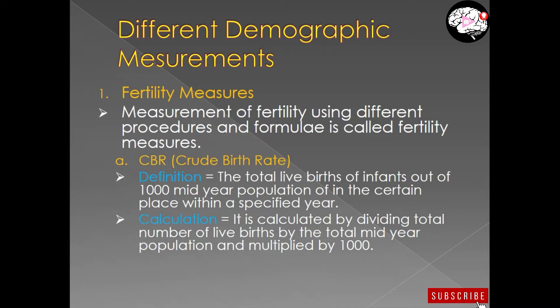First, you have to know the word meaning. 'Crude' means very raw, very simple — a primary type of birth rate. This is a type of birth rate which is very simple and normal, giving you raw data. By definition: the total live births of infants out of a thousand mid-year population in a certain place within a specified year is called the crude birth rate. Here, 'total live births' refers to the total number of live births.